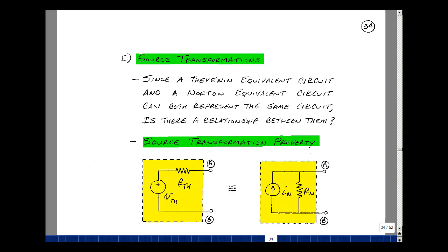This lesson deals with source transformations. You can find these notes in the course e-book in Chapter 3, starting on page 34. Since a Thevenin-equivalent circuit and a Norton-equivalent circuit can both represent the same circuit, is there some relationship between them? The answer is yes, and it's called the source transformation property.